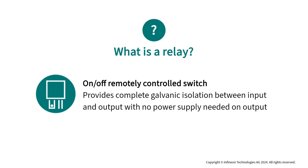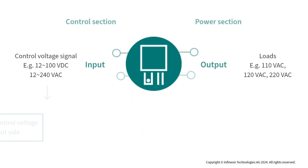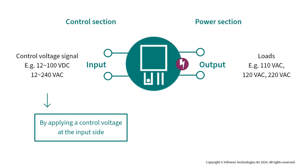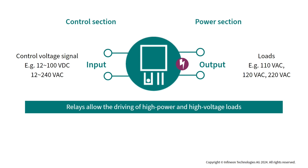A relay is an on-and-off isolated controlled switch that provides complete galvanic isolation between input and output with no power supply needed on the output. By applying a control voltage at the input side, switches or contacts are activated at the output side to energize a load. Relays allow, for example, the driving of high power, high voltage loads such as siren alarms, lighting signals, or compressor boards by a low power signal.